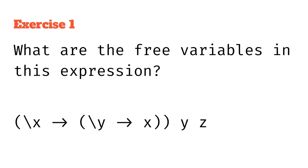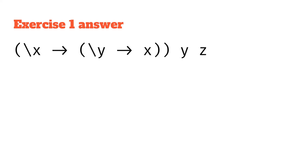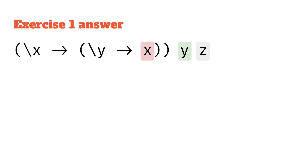So just so we understand free variables, we're going to do it by inspection. We can identify three variables: x, y, and z. The first x is bound by the function abstraction two layers above it. The y — there is a y being bound by a function abstraction, but that y is not inside that function abstraction, so it's actually free. And that z is not bound anywhere at all, with no function abstractions above it, so it is free as well.